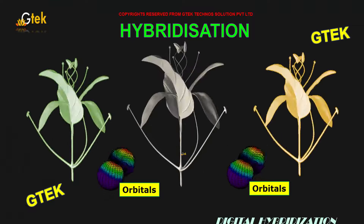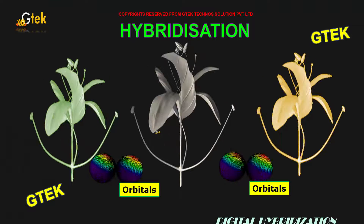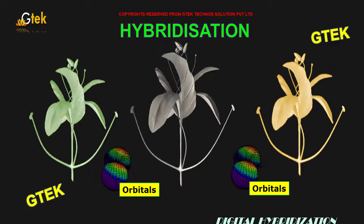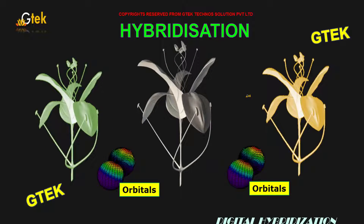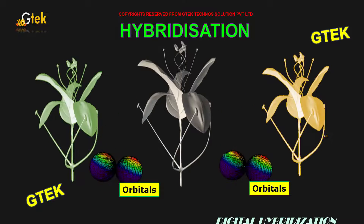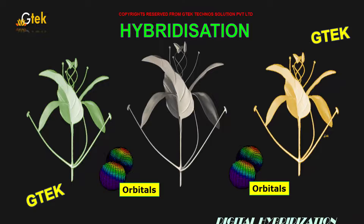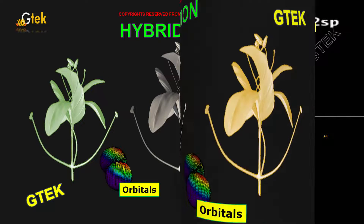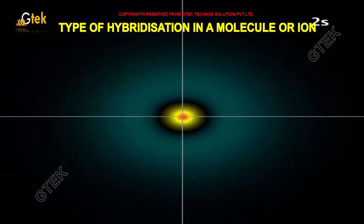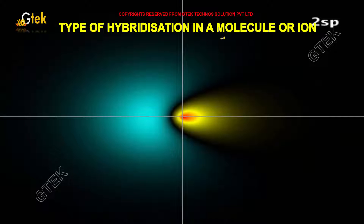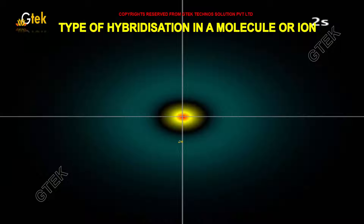What is hybridization? You are able to see the same plant in different colors — this is called hybridization. We are going to look into the types of hybridization in a molecule or ion, and how hybridization is happening.